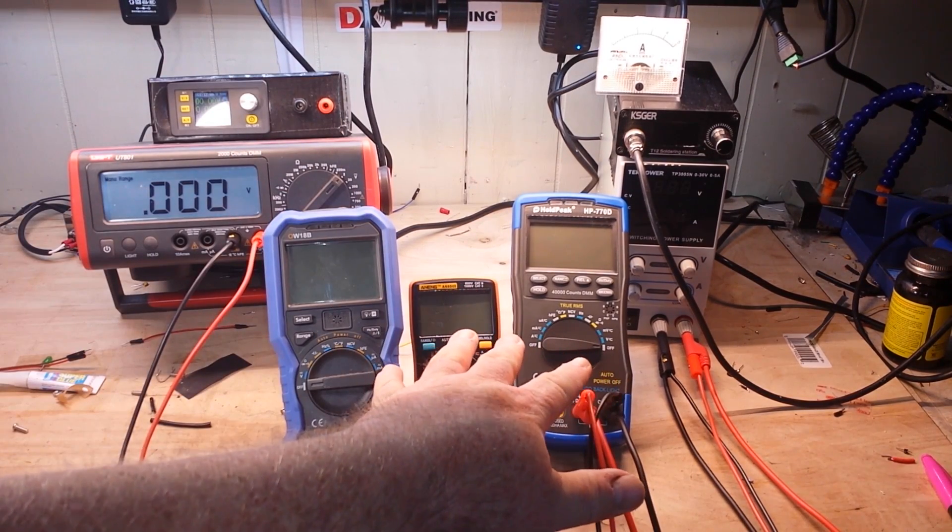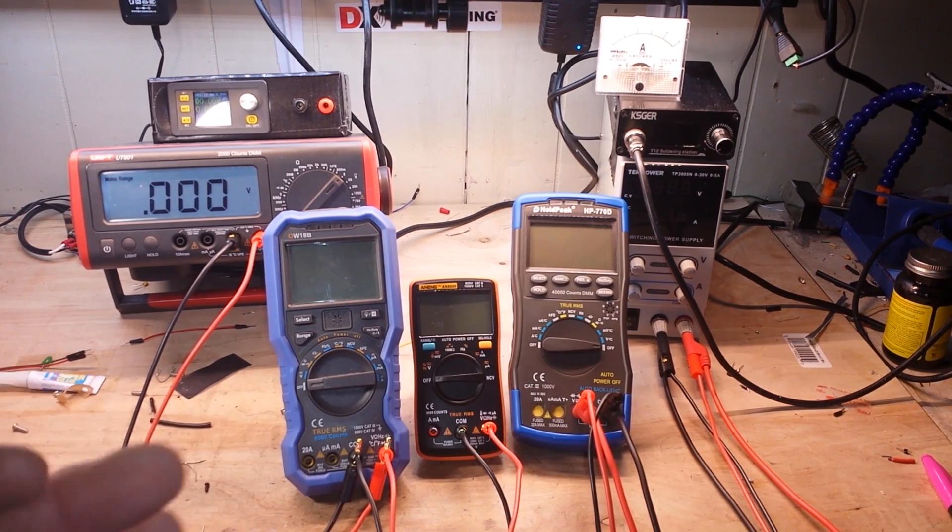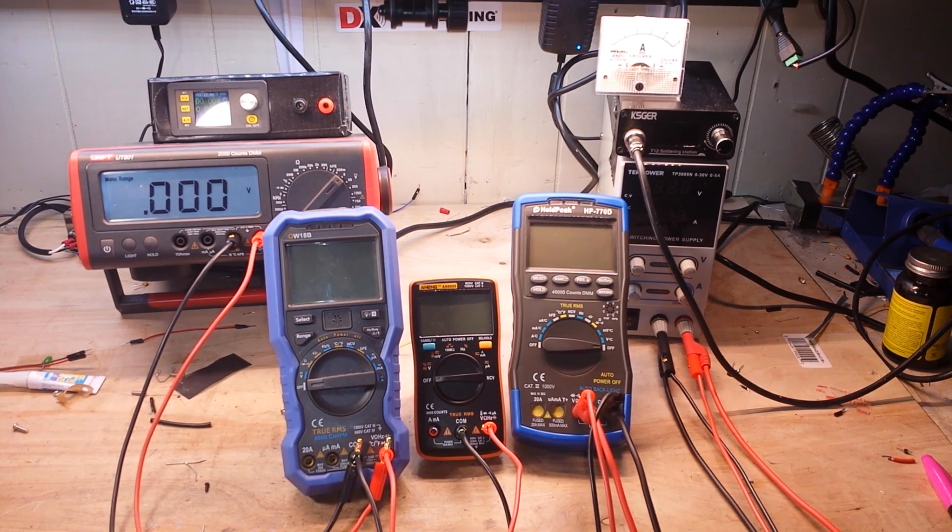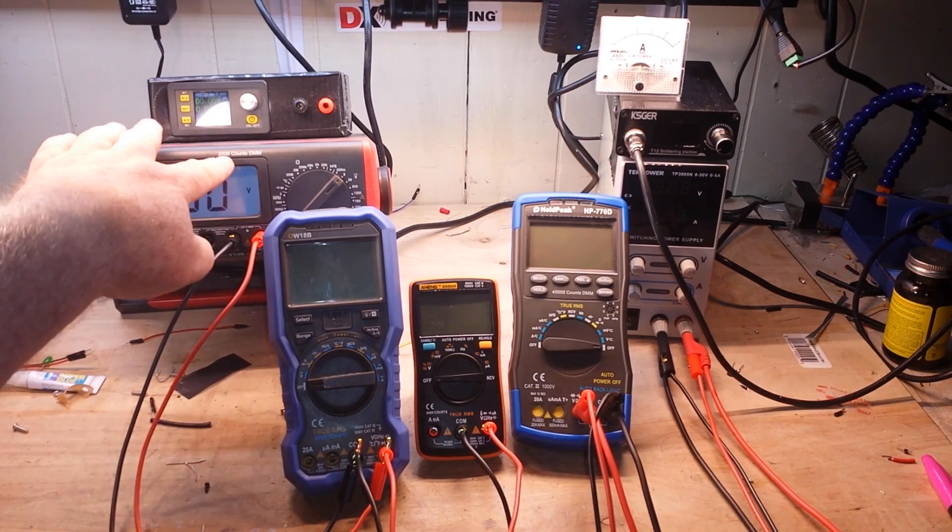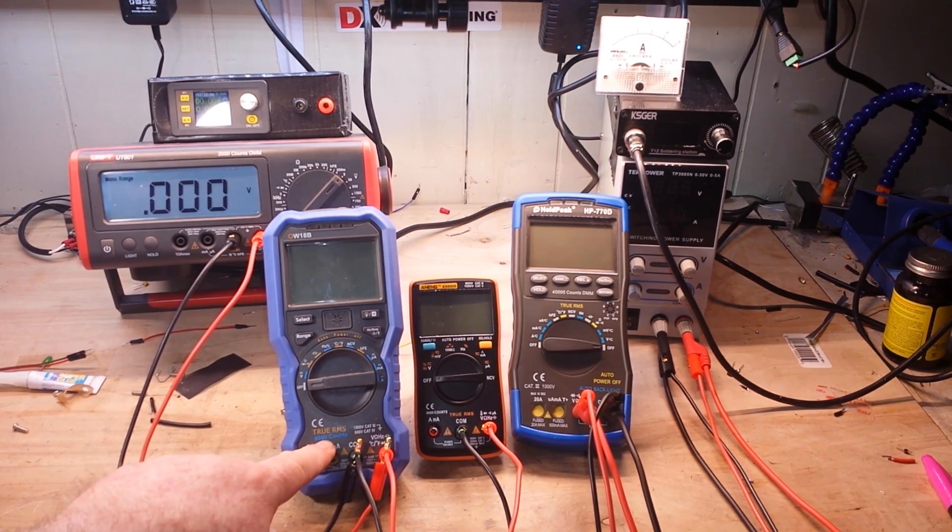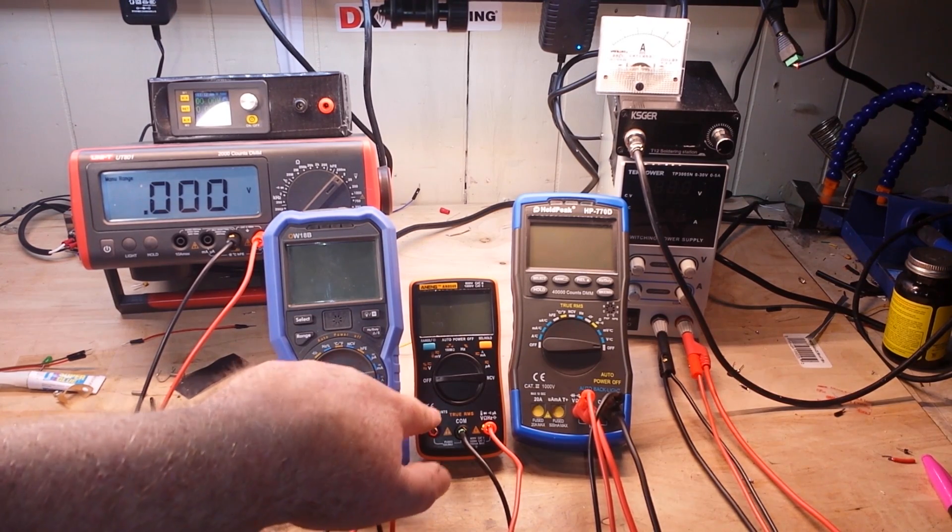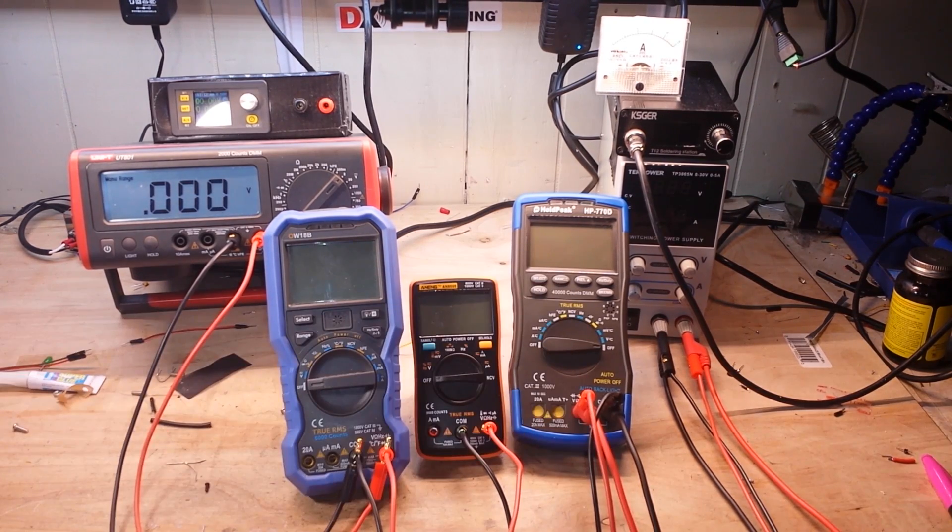These three are auto-ranging, they'll pick their own range. Now you will see meters advertised with their counts. This is 2,000 counts, this is 6,000 counts, this is 9,999 counts, and this is 40,000 counts.